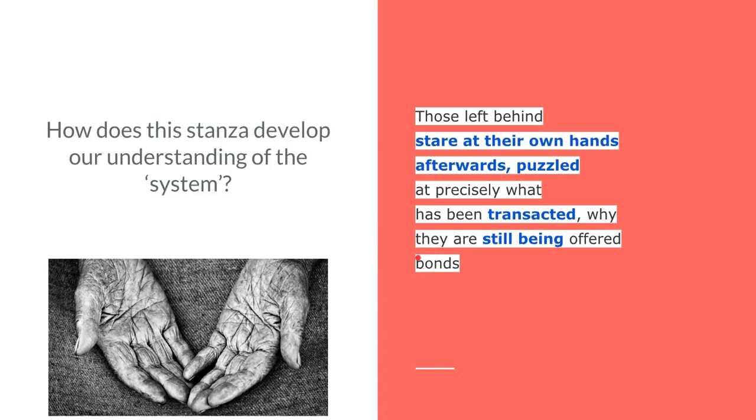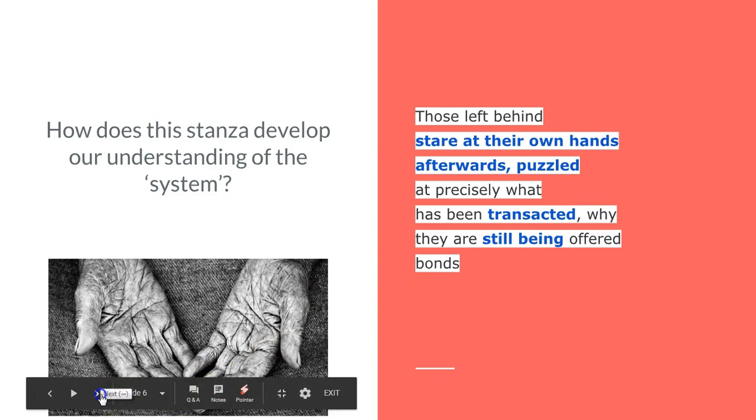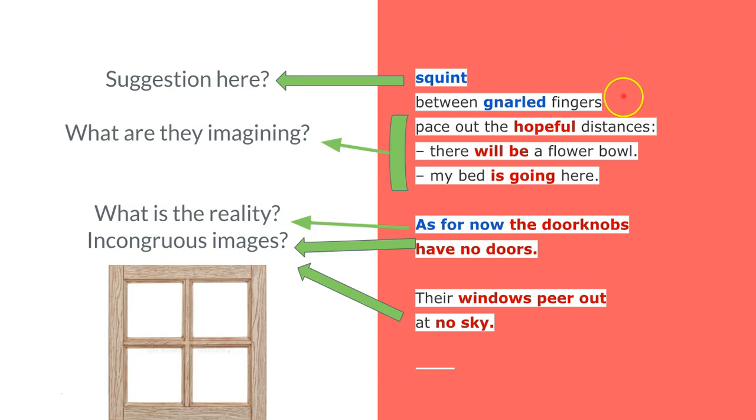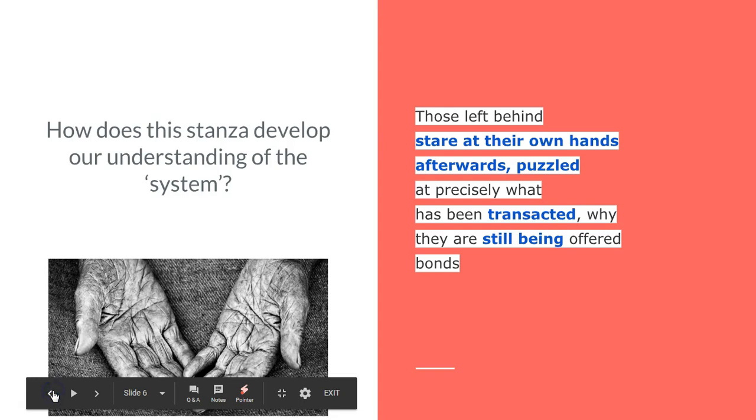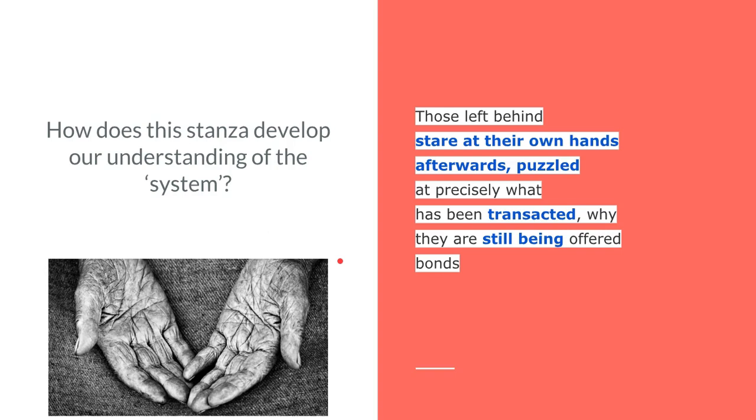If they don't have anything tangible in front of them, they only have promises. When I read this, I always imagine an old woman's hands or an old man's hands, because in the next stanza you'll see 'they squint between gnarled fingers.' For me, the gnarled makes me think of old, crooked fingers, which only emphasizes the length of time that these people have been waiting for their houses to be delivered.